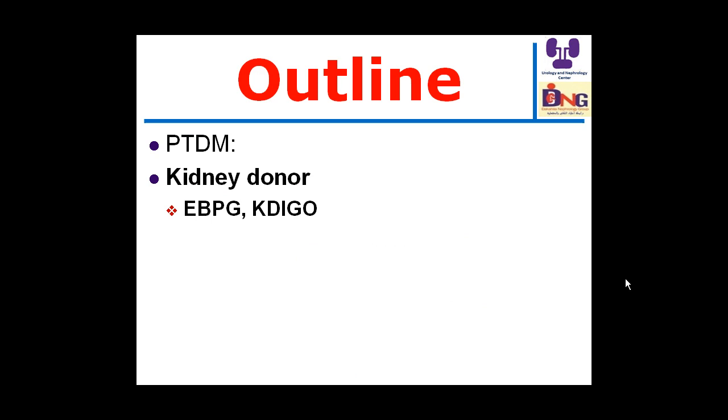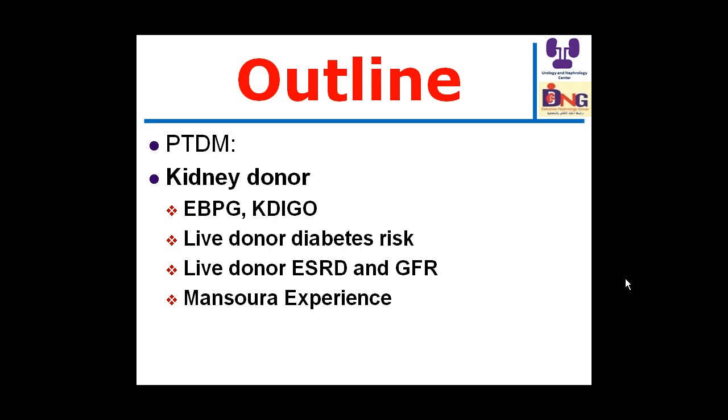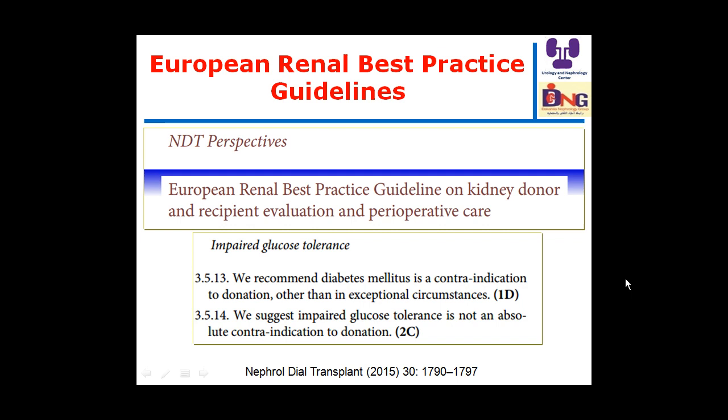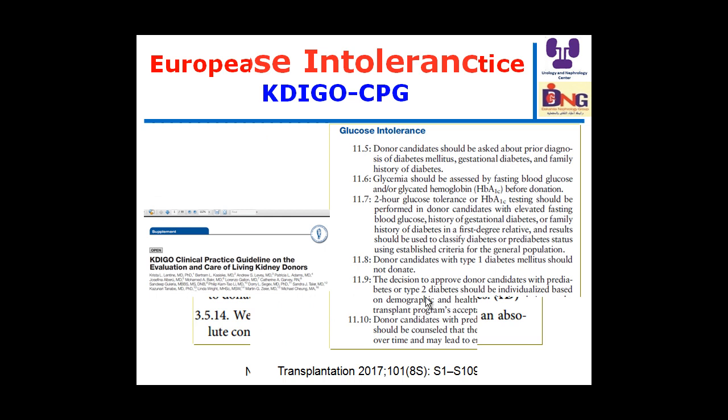Regarding the kidney donor: the European Best Practice Guidelines released in 2015 recommend that diabetes mellitus is a contraindication for kidney donation. If a potential living donor has diabetes, this is an exclusion criterion. Our practice is to refuse to proceed if the donor is diabetic or has impaired glucose tolerance. We suggest impaired glucose tolerance is not an absolute contraindication per some guidelines, but in our practice we do not agree to proceed with donation in such cases.